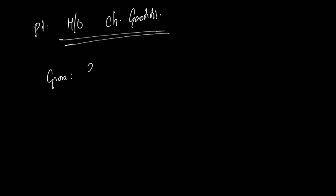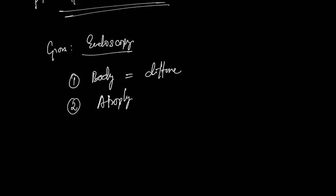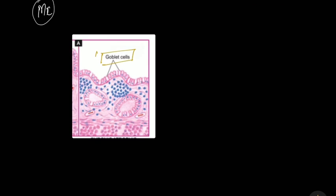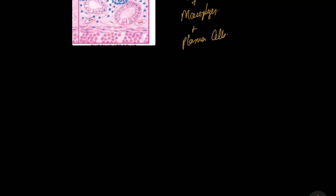The patient presents with a history of chronic gastritis. In the morphological features, under endoscopy, the changes seen in the body are diffuse with atrophy. Under microscopy, we see goblet cells, and being an inflammatory condition, we see infiltration of lymphocytes, macrophages, and plasma cells.